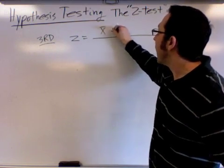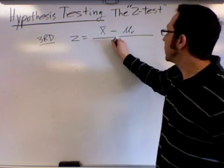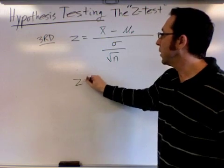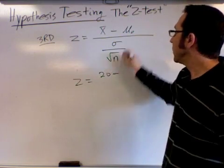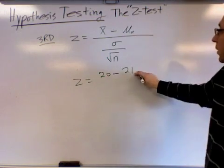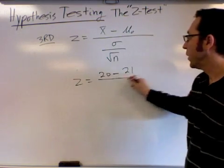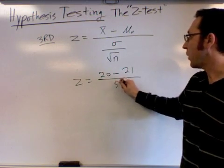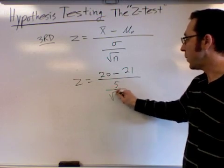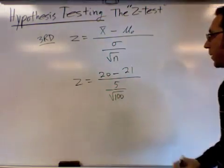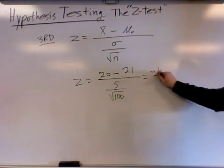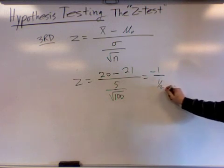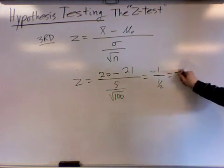The formula you're following is this guy right here. It's the statistic, which was 20, take away the null parameter, or the mean, which was 21, divided by the standard deviation, which we were told was 5, and how many people we were dealing with was 100. If you do the math on this, you get negative 1 over a half. So we get a z-score of negative 2.